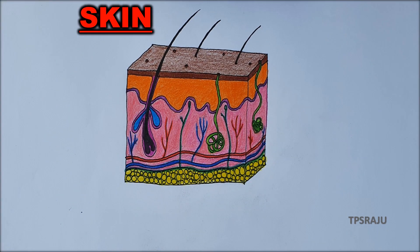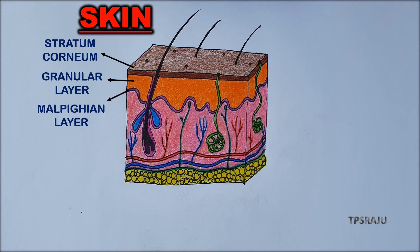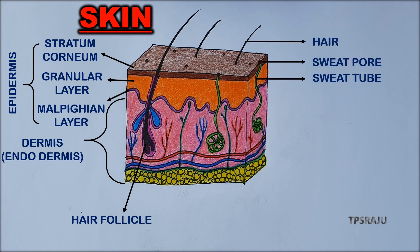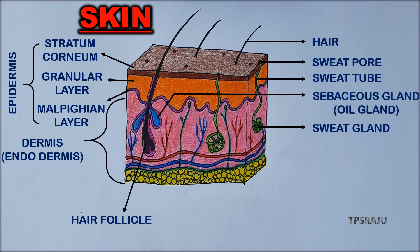Finally, shall we label the parts. Stratum corneum, granular layer, Malpighian layer — these belong to epidermis. Dermis or endodermis. Hair follicle. Hair. Sweat pore. Sweat tube. Sweat gland. Sebaceous gland or oil gland. Adipose tissue.